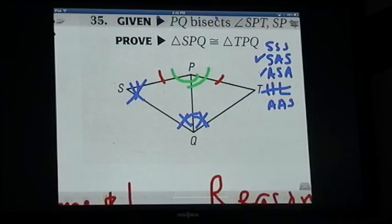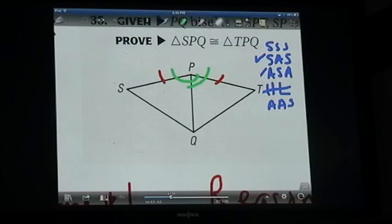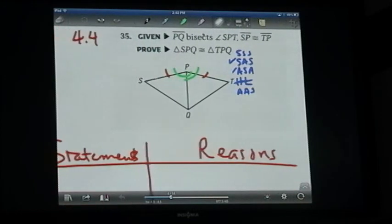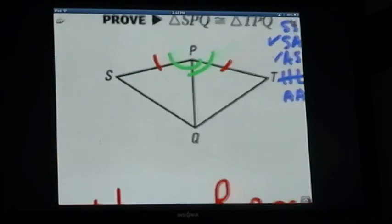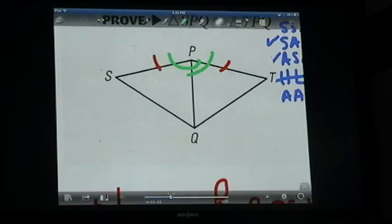I'm trying to show you how to work it out in your mind. And so then you say, well, what's left for us to use? Well, it could be side-angle-side. That would mean that we would need to be able to prove that PQ is congruent to PQ, which is easy for us to do.